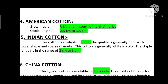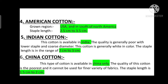The last one is China cotton. This type of cotton is available in China only. The quality of this cotton is the poorest and it cannot be used for finer variety of fabrics. The staple length is 1.5 cm to 2 cm.